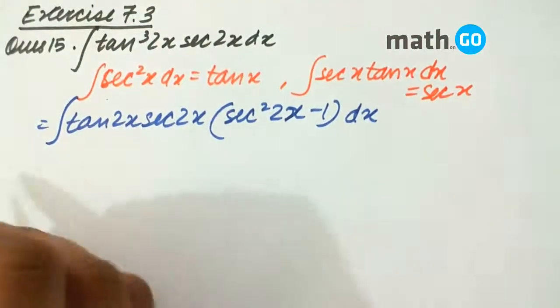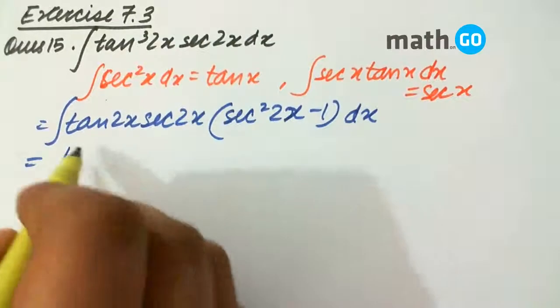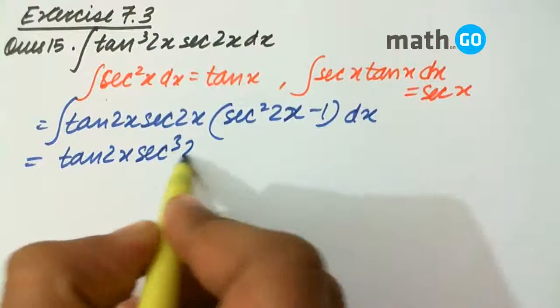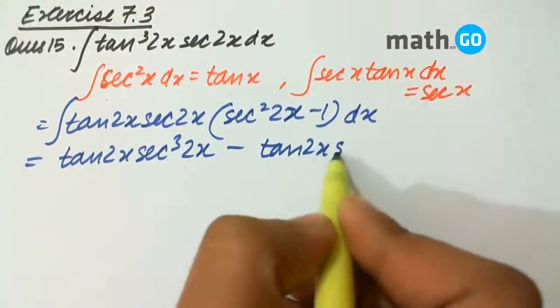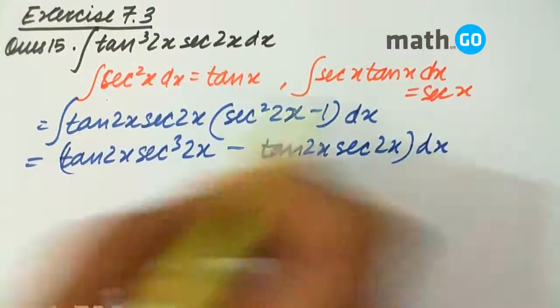Come integral. Now, we divide it. We get tan 2x into sec cube 2x minus tan 2x into sec 2x, integral.